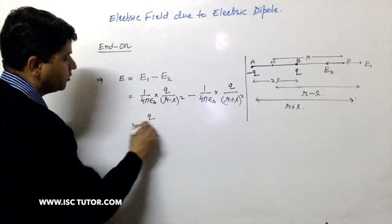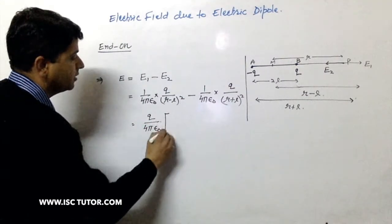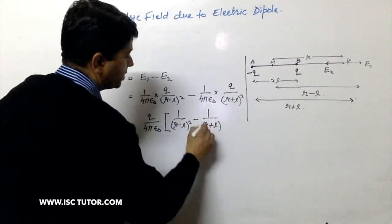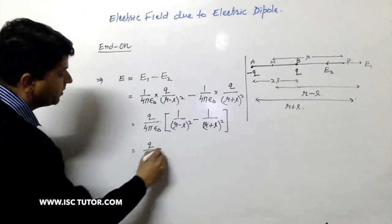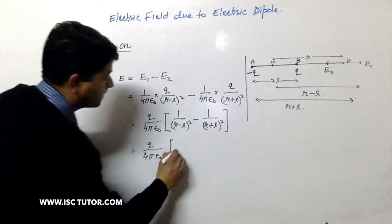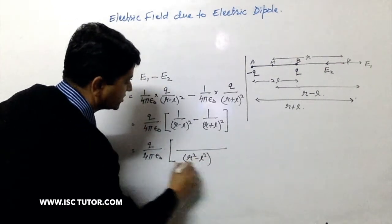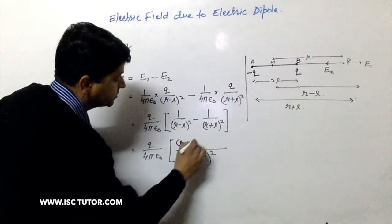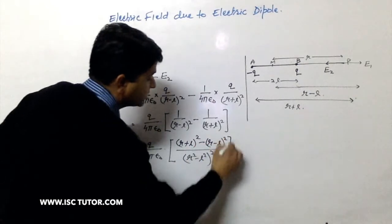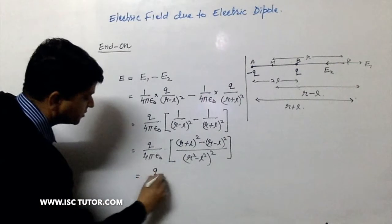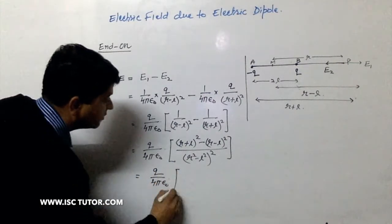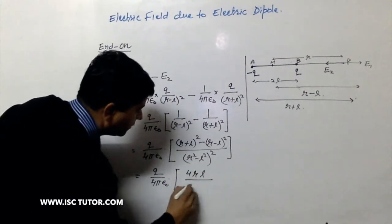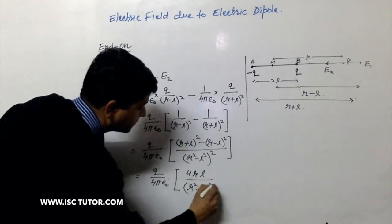Now we can take out Q upon 4 pi epsilon 0 and we can write this as 1 upon R minus L whole square minus 1 upon R plus L whole square. Simplifying it further, taking LCM we get R square minus L square whole square, and numerator becomes R plus L whole square minus R minus L whole square. So when we simplify the numerator we get 4 times R times L upon R square minus L square whole square.